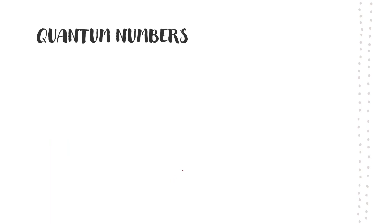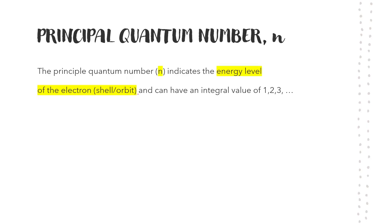Quantum numbers. We are going to study about what is N, what is L, what is M, and what is S. The first one is N — principal quantum number. Principal quantum number N indicates the energy level of the electron, or the shell, sometimes also called orbit.